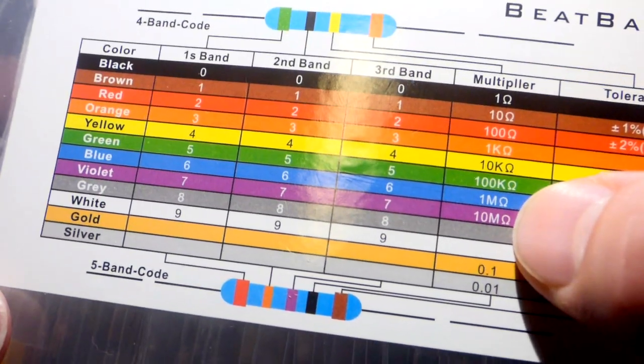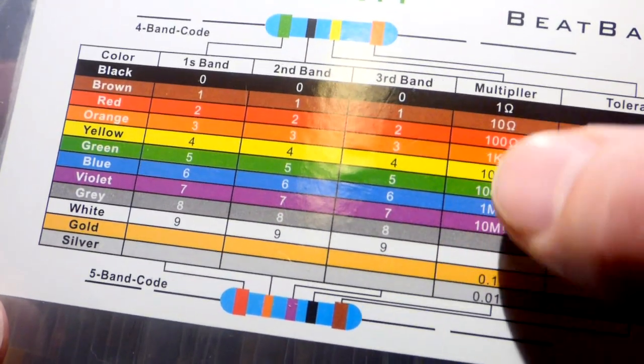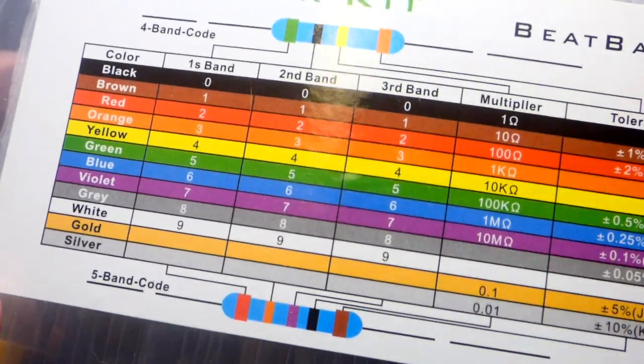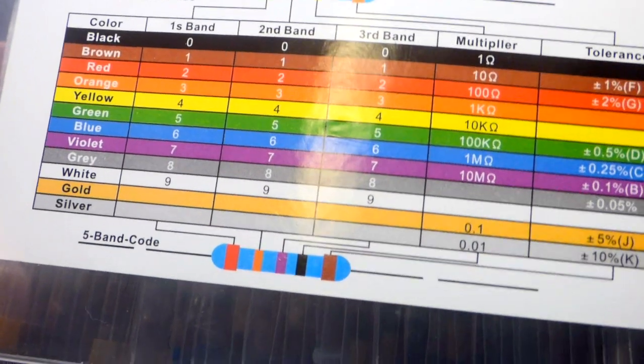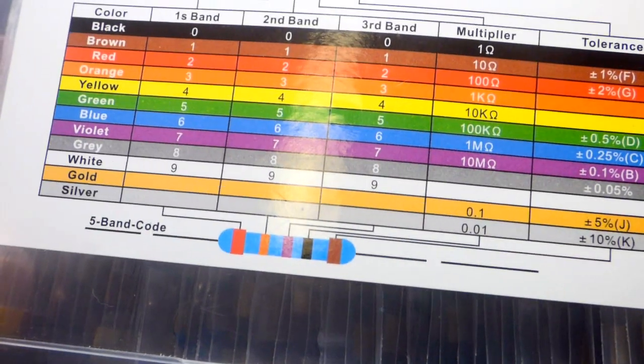And then this actually shows the multiplier. Whereas for me, I just like to know that that's the number of 0s that you add afterwards. So whatever works best for you. In any case, hopefully this was helpful. Thanks for watching. I'll see you in the next video.